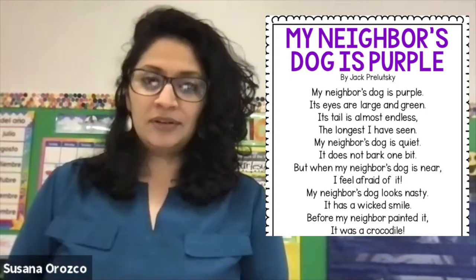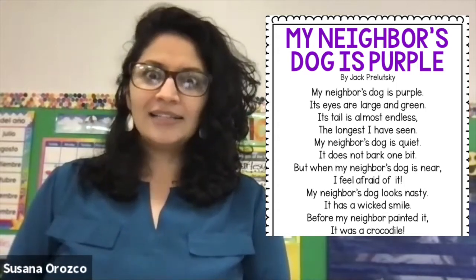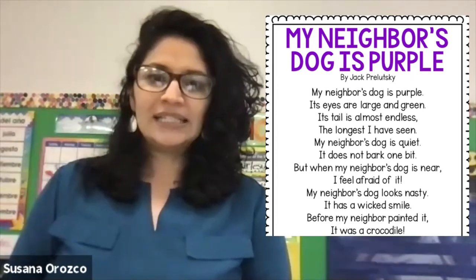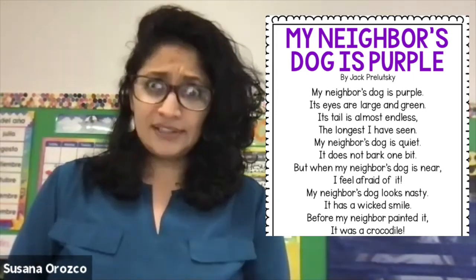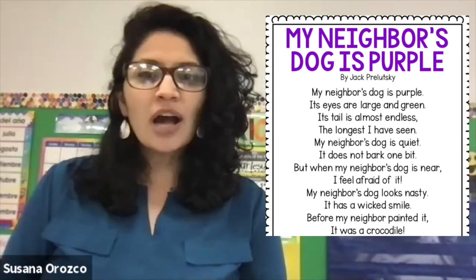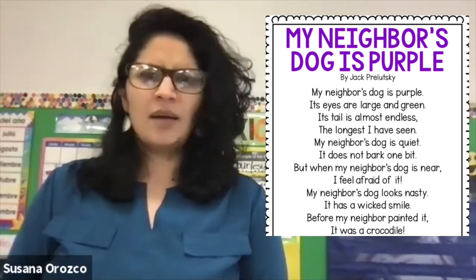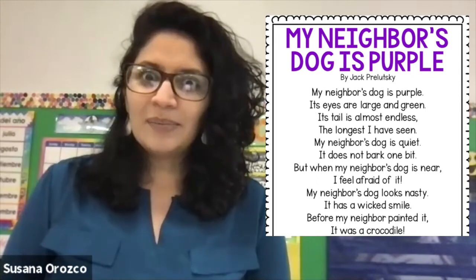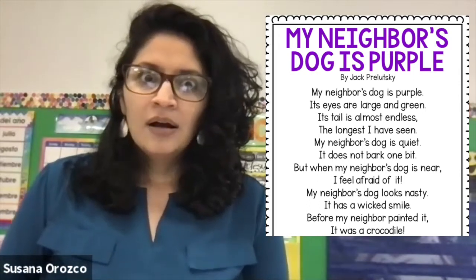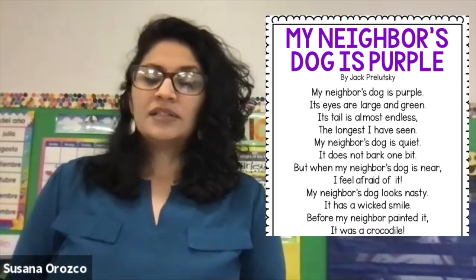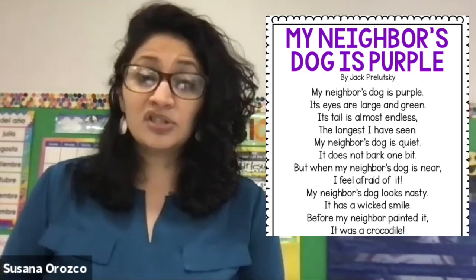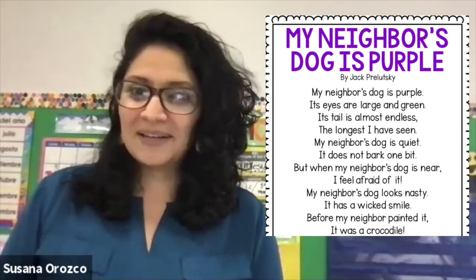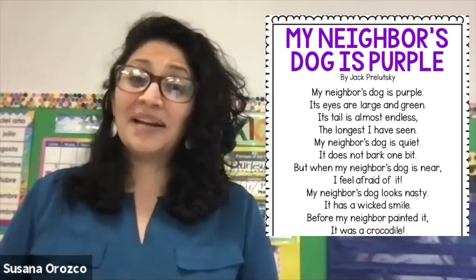My neighbor's dog is purple. Its eyes are large and green. The tail is almost endless, the longest I have seen. My neighbor's dog is quiet — it does not bark one bit. But when my neighbor's dog is near, I feel afraid of it. My neighbor's dog looks nasty. It has a wicked smile — before my neighbor painted it.